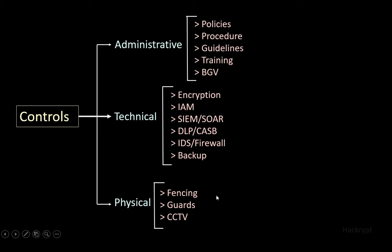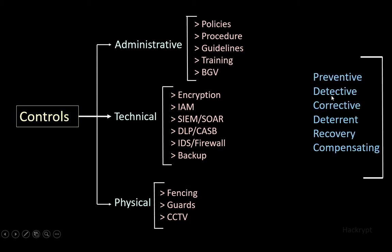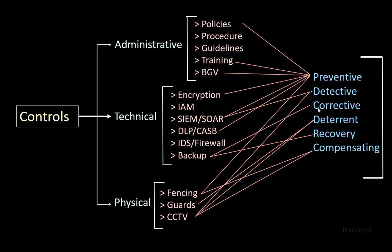These controls have different functionalities: preventive, detective, corrective, deterrent, recovery, and compensating. For preventive, we use DLP and CASB to prevent data loss. For detective, we use SIEM to detect any security incident. For corrective, we use backup to restore damaged files. For deterrent, we use guards and CCTV so there won't be any intrusion. For recovery, we use backup in case data has been lost. For compensating, that is the alternative safeguard — if we don't have guards we can compensate with fencing and CCTV.